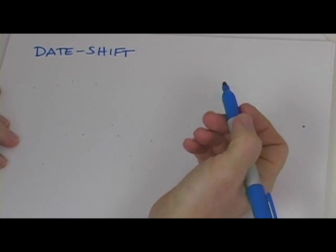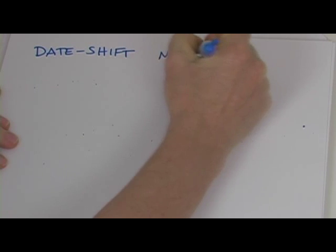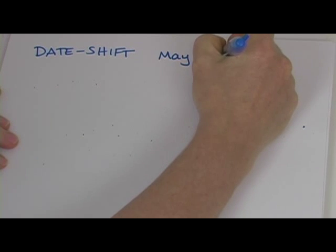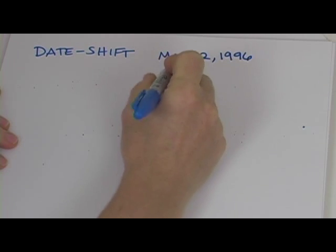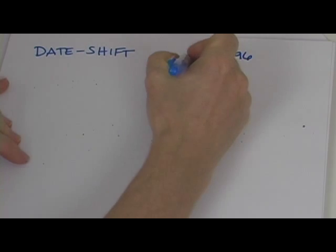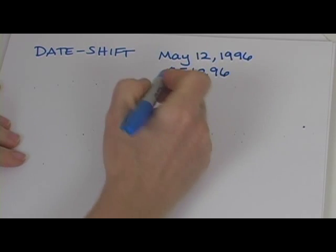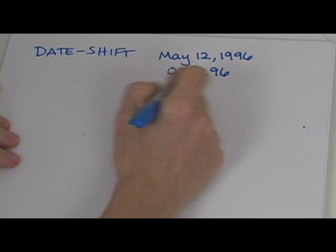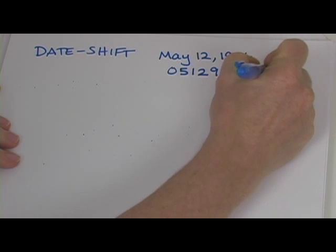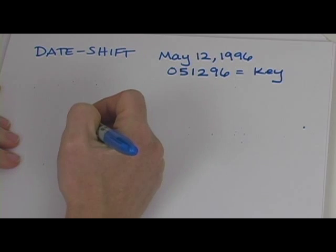Now there are many ways to do this and one way is to use the date which you send the message as your key. So if I send my message on May 12th in the year 1996, I can write May 12th 1996 as a number. That number becomes 051296 and so that's going to be my key. You can eliminate the dashes so it becomes a six digit number.